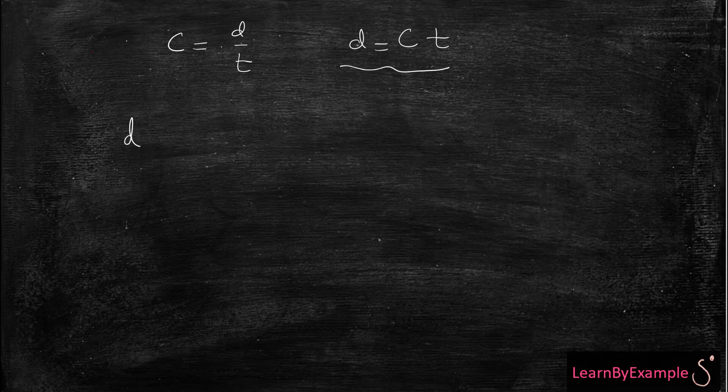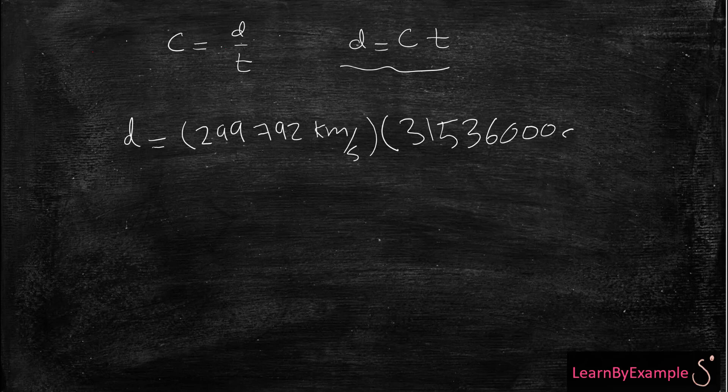So I'm looking for distance, which is my light year in kilometers. Speed of light is 299,792 kilometers per second times the T that I got from the previous page. So 31,536,000 seconds. And if I were to multiply them together, I will end up with 9.45 times 10 to the power of 12 kilometers. So that is the distance that the light travels in one year.